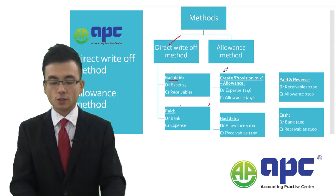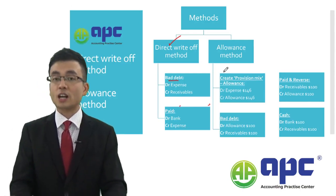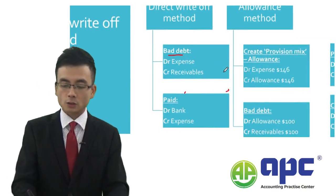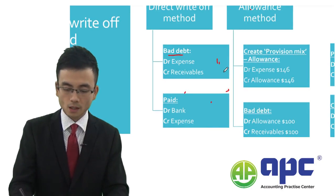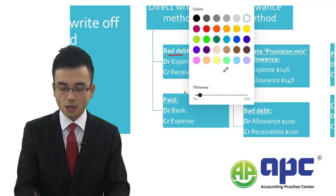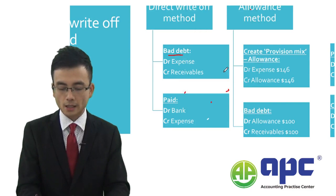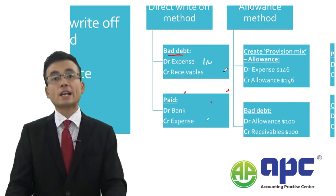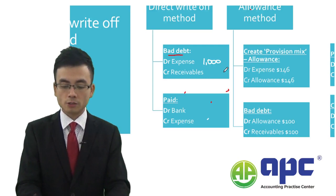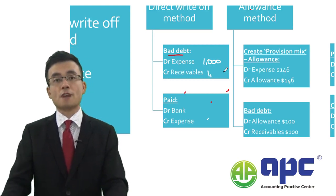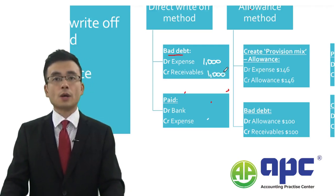The accounting journals for that — first of all, under the direct write-off method, I should write off the $1,000. I would provide for $1,000 of irrecoverable debt expense to reduce my profit, and at the same time I will reduce my receivables by $1,000. And that's how we do it.